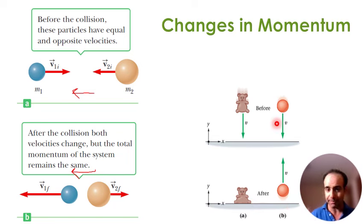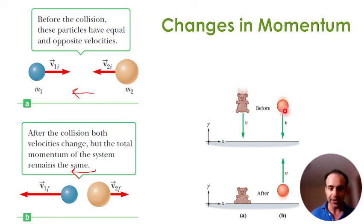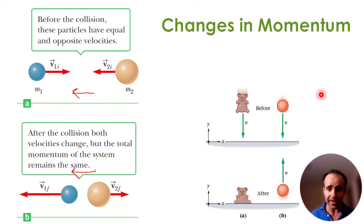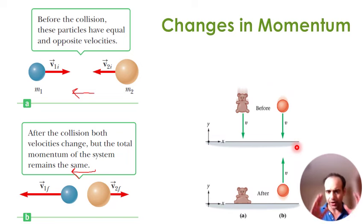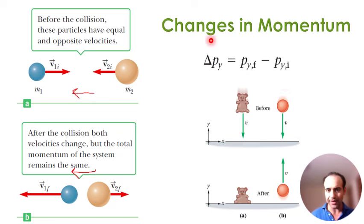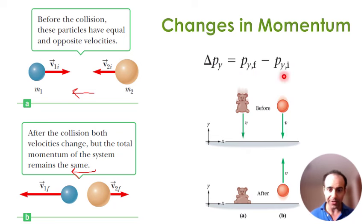When a bouncy ball hits the ground, it actually bounces back up with a velocity that is completely opposite to what it initially had. So it starts with a negative v going downward and finishes with a positive v going upward. In cases like this you can observe a change in momentum, and you can use P-final minus P-initial. It's one-dimensional, which makes things easy, and that is one way to calculate change in momentum or impulse.